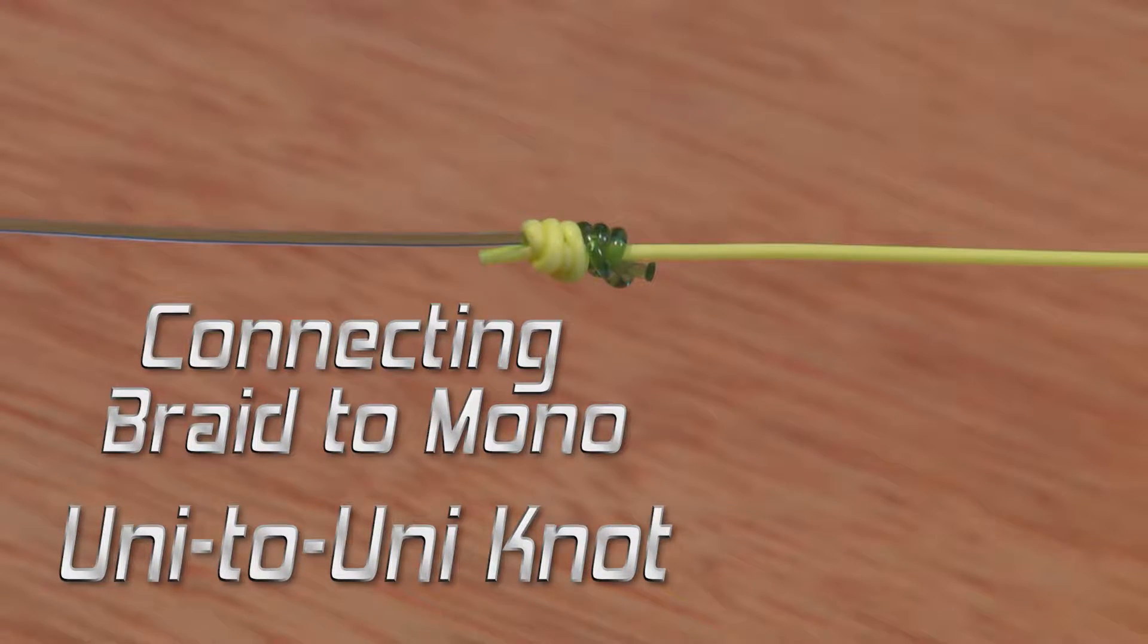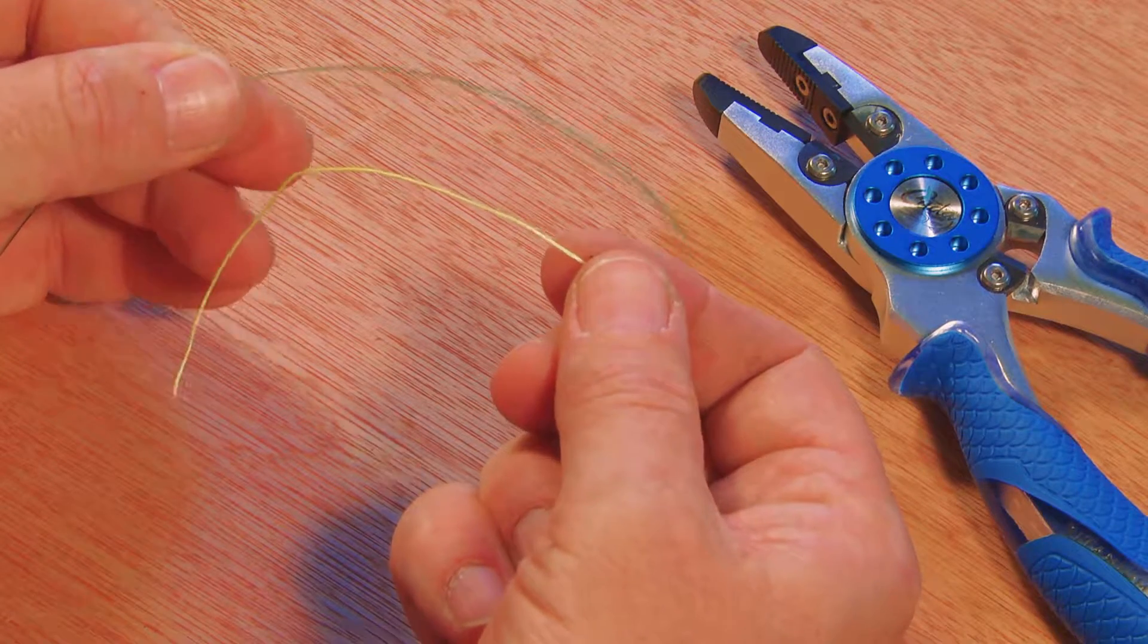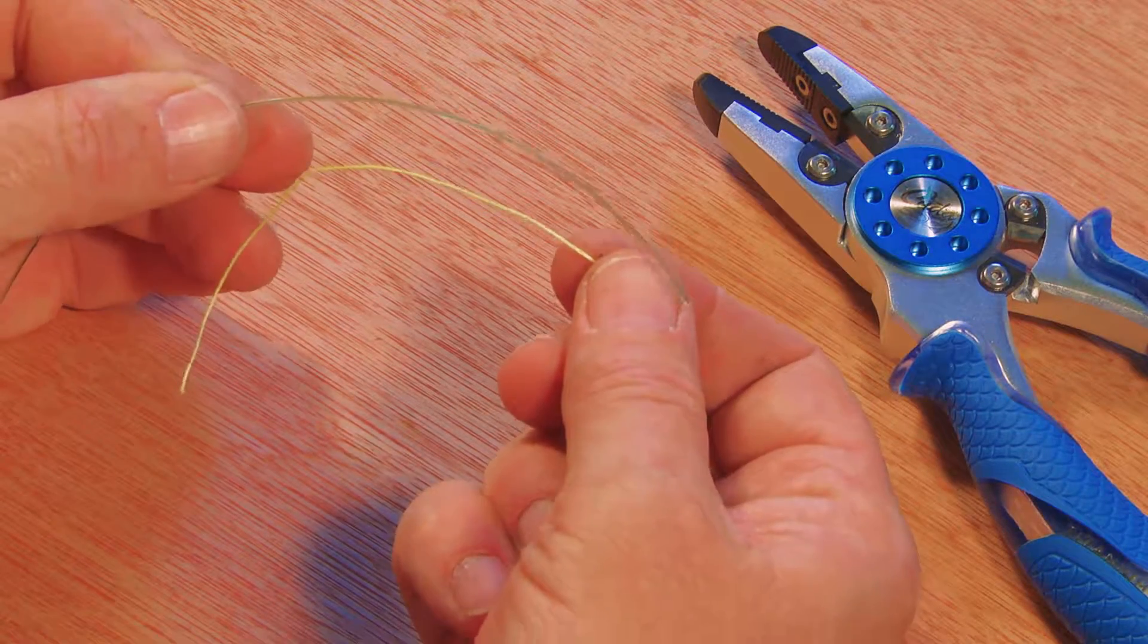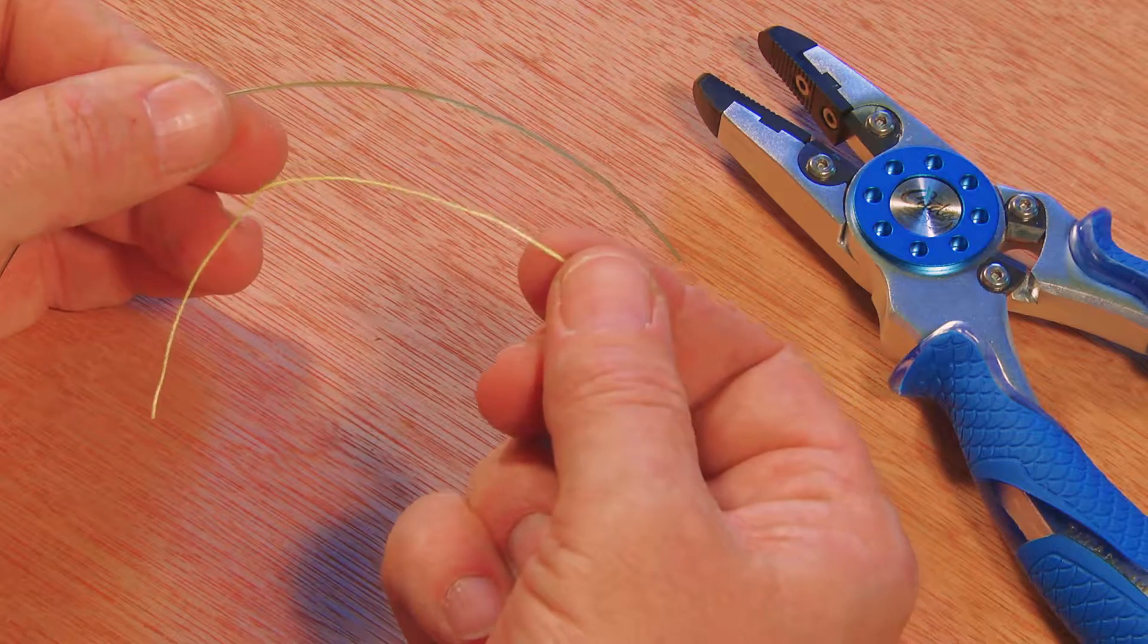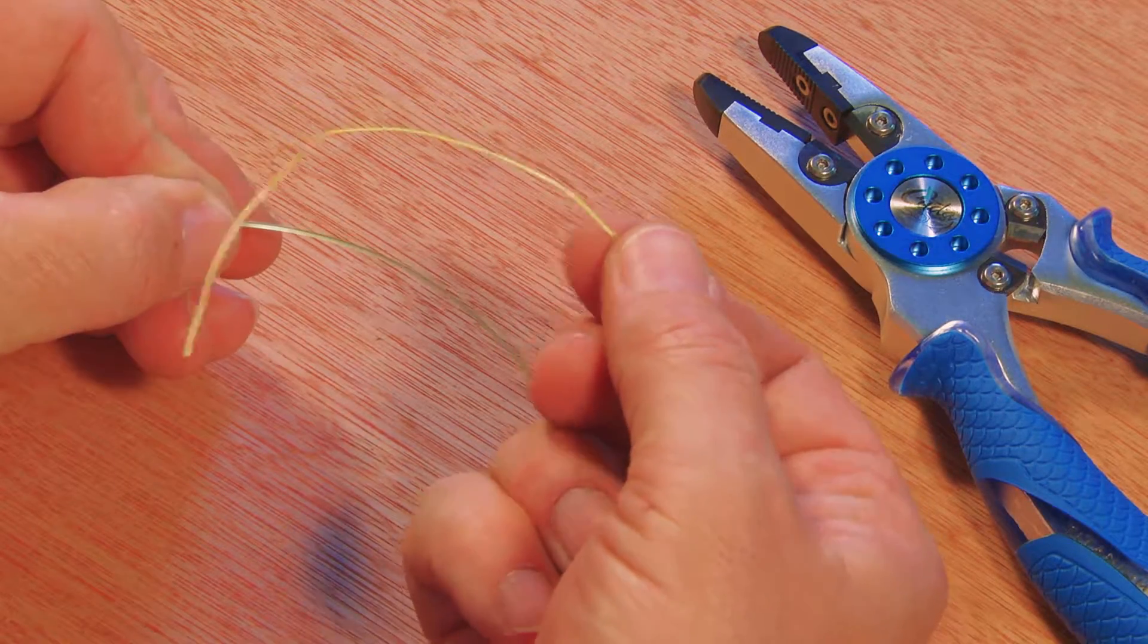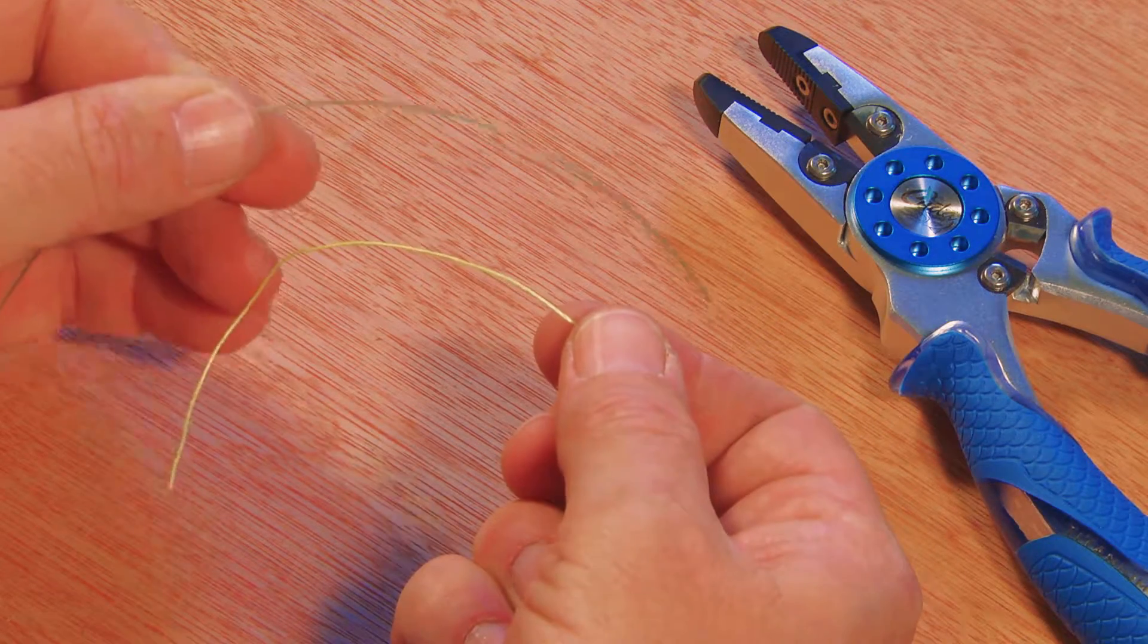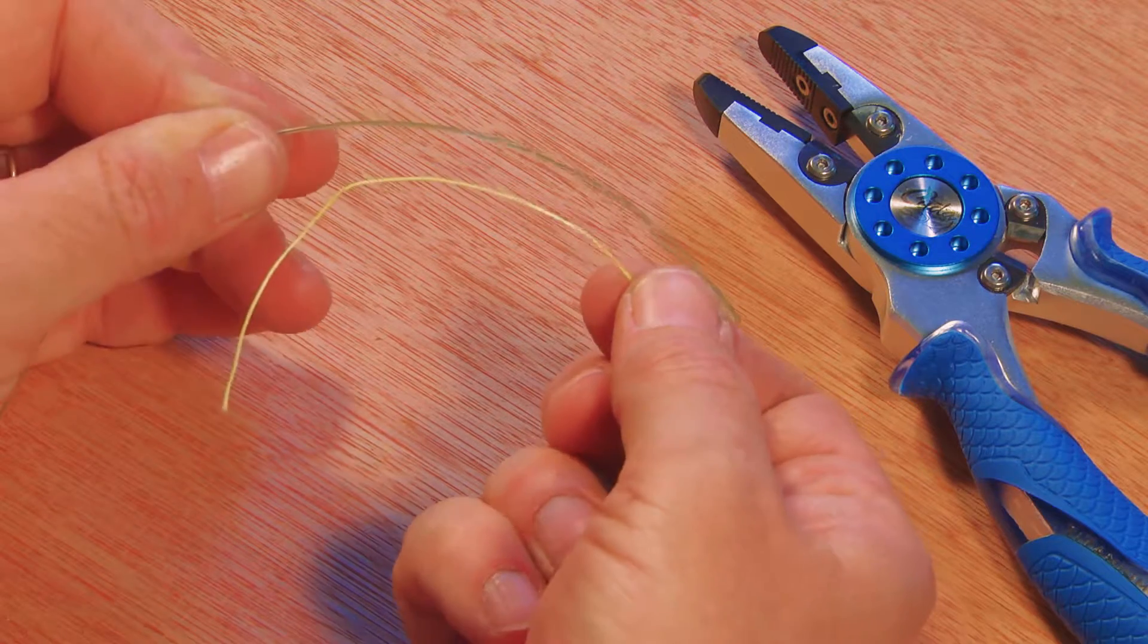Here's an application of the Uni Knot where it really shows off its versatility. I'm wanting to connect two lines together, but they're different diameters. I want to connect my 80-pound class braid mainline here to my 80-pound class monofilament line, and you'll notice the monofilament is nearly twice the diameter of the braid.